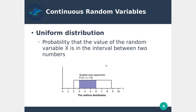What we're actually interested in with continuous random variables is calculating the probability that, say, x is greater than 3 and less than 6 — what's the probability that x falls in this middle area? In this uniform distribution, x has the same probability of being any of these values, and we want to know what's the probability that x falls within 3 to 6. With a uniform distribution this is relatively easy to calculate, but the key concept is understanding the probability that a random variable x lands between some interval.